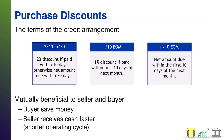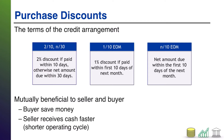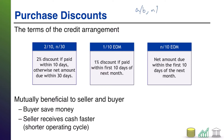Purchase discounts. Whenever you buy something on account, there may be what they call credit terms along with what you're buying. The terms are typically structured in the way you see here: something slash something followed by something else. The most common format, which I'm going to express in algebraic terms, is A slash B, N slash C.